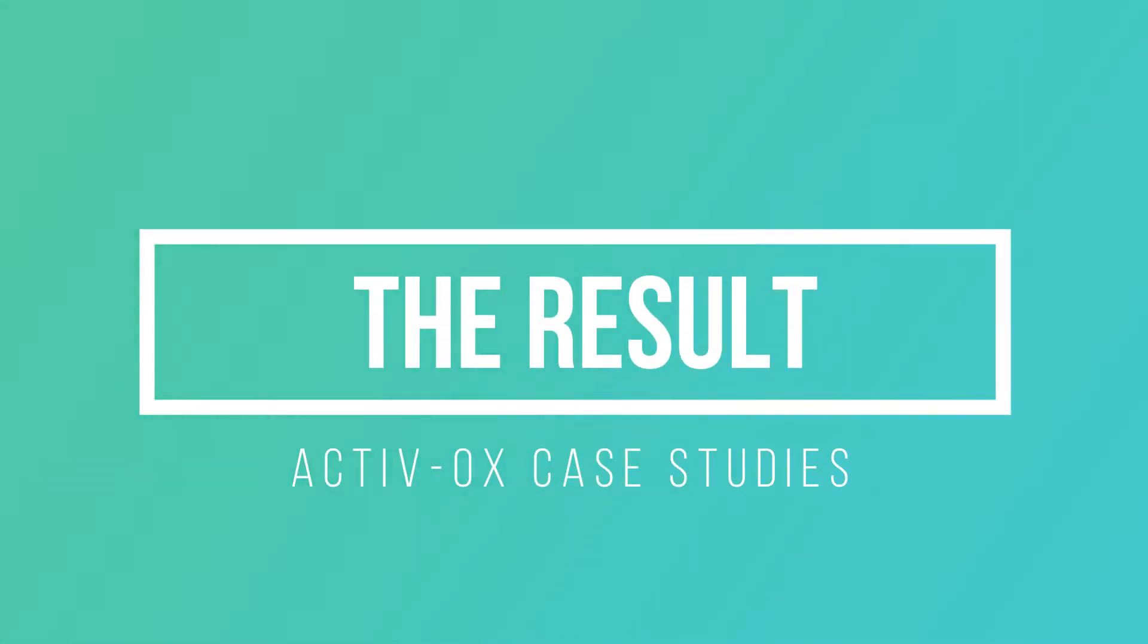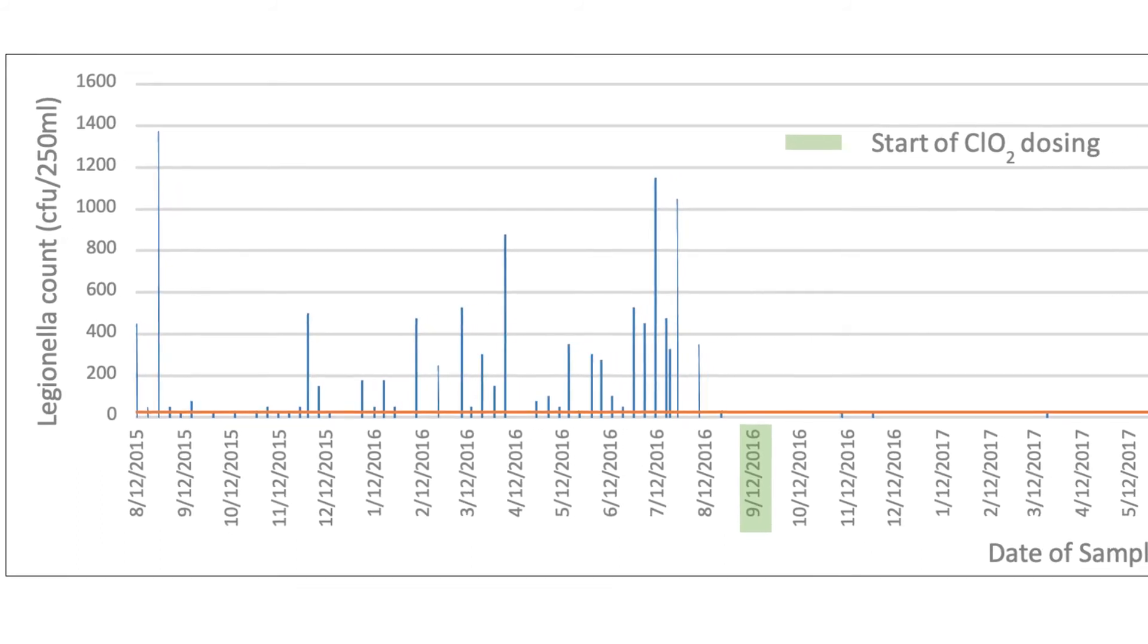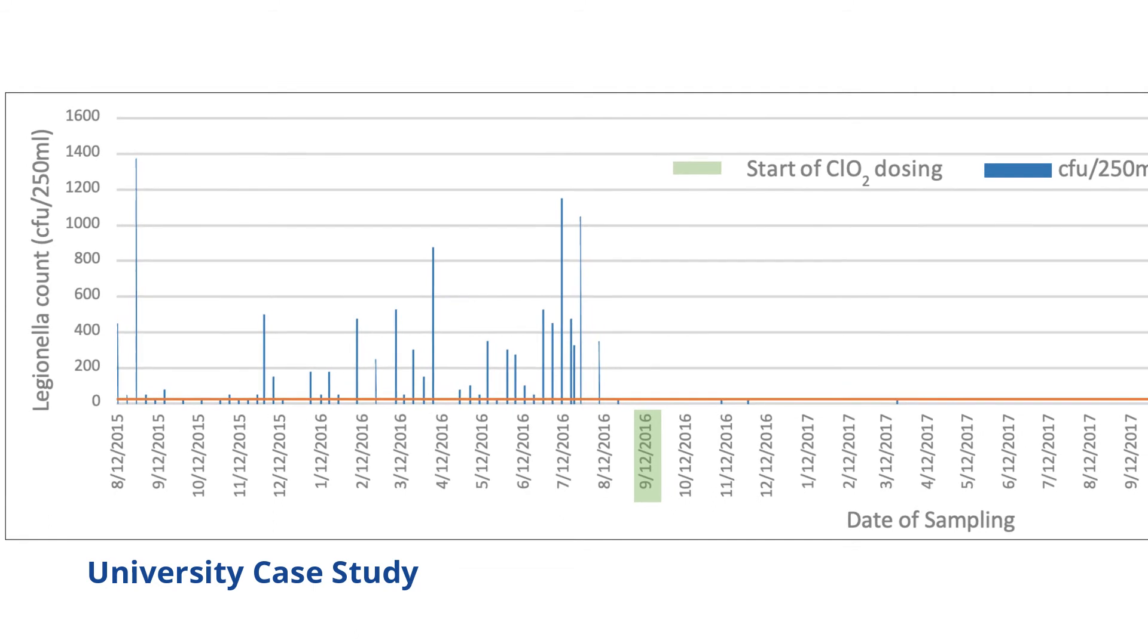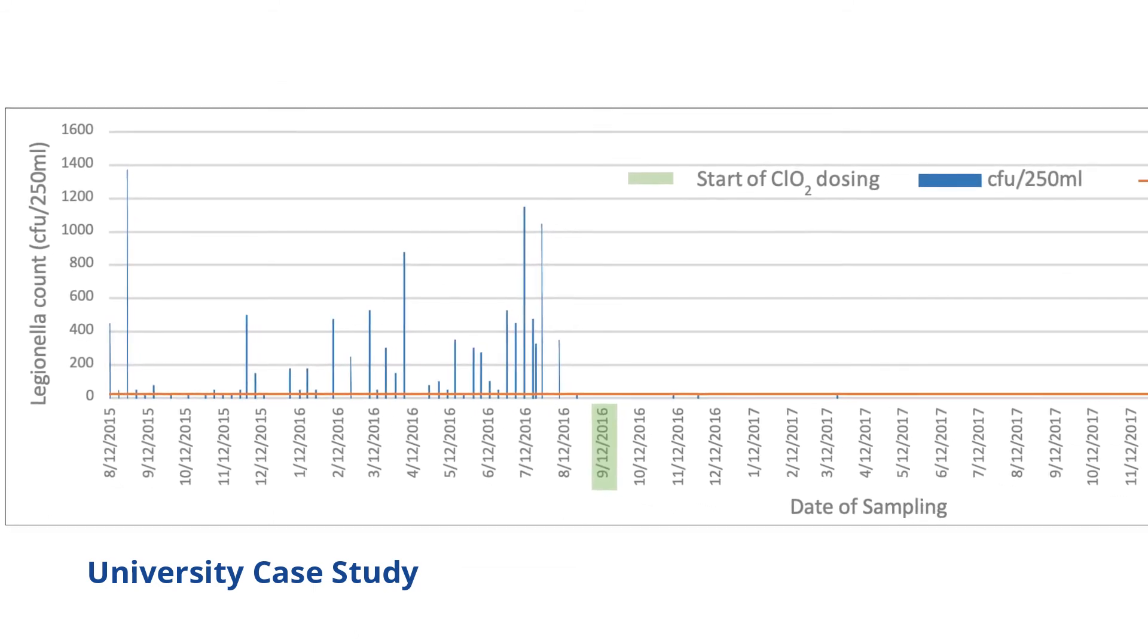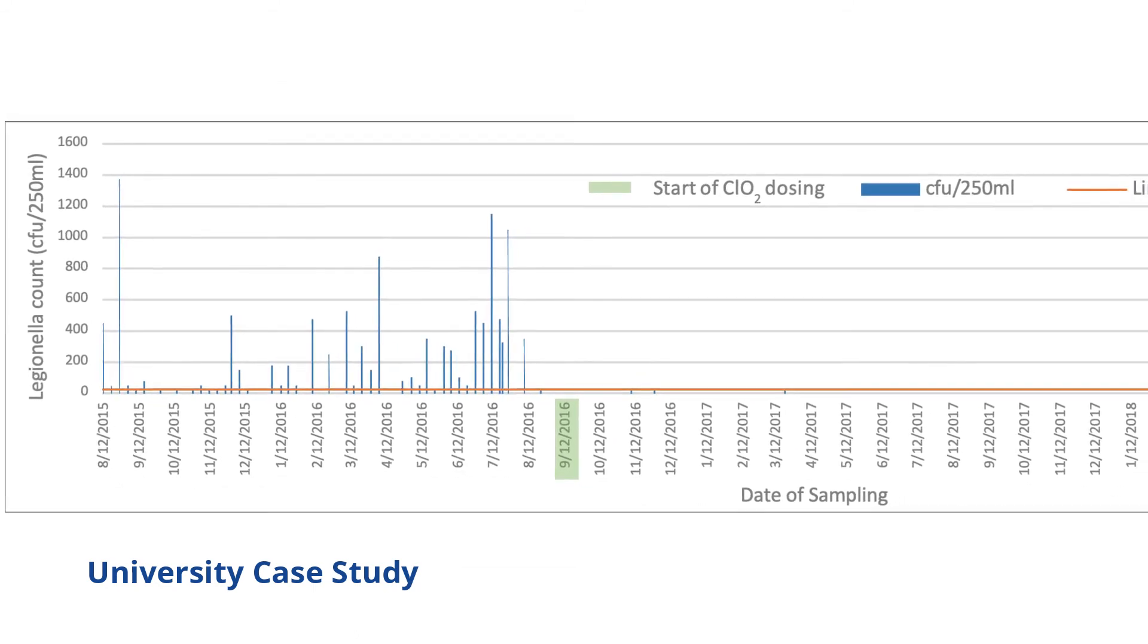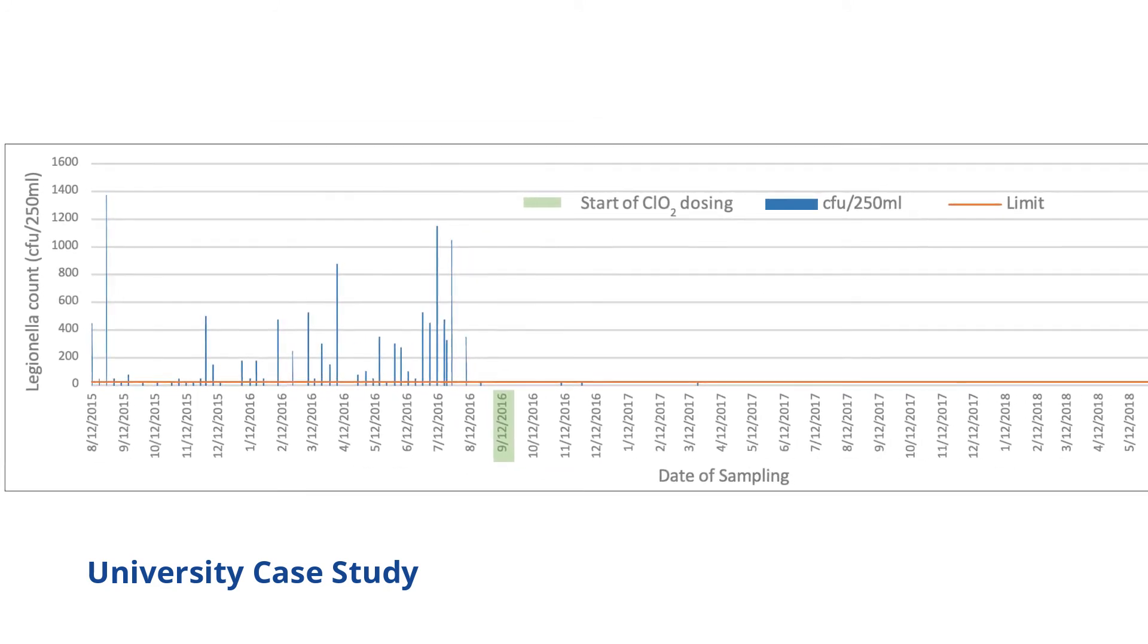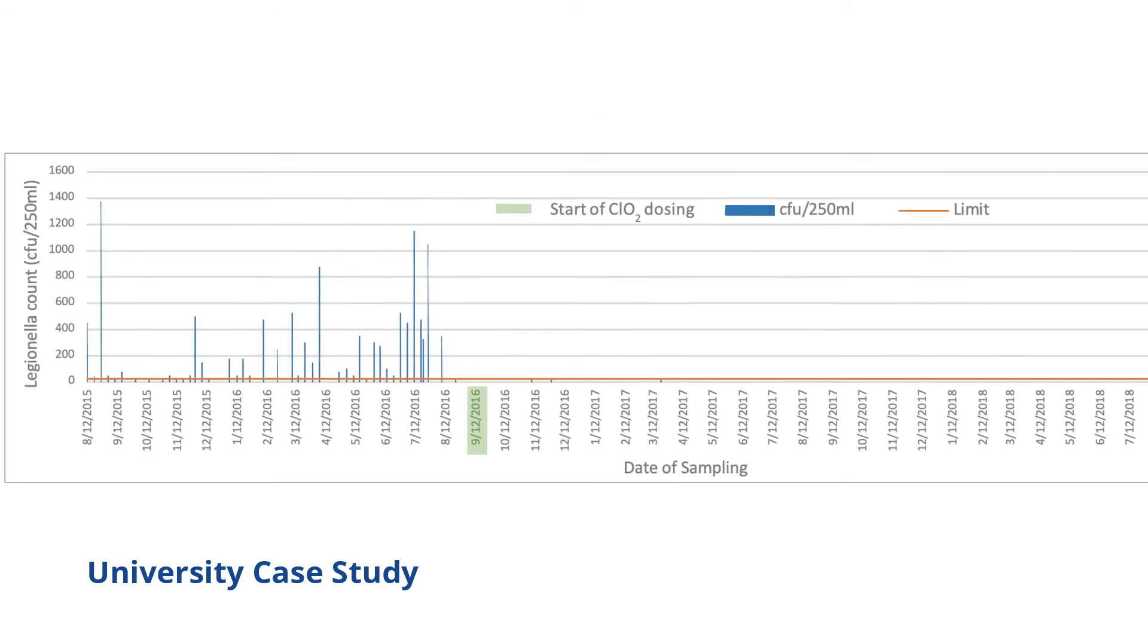So how about the result? Here we see real data from an Activox installation at a prestigious British university. The chart shows a three-year testing period for Legionella with over 1,500 samples taken before and during dosing, which highlights the immediate and sustained control achieved by using Activox.